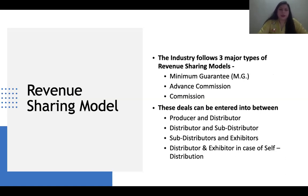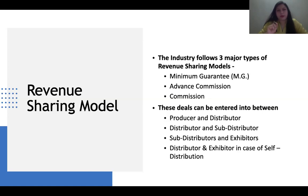The revenue sharing model is important — the industry follows three major types. The first is Minimum Guarantee: an initial fixed amount is paid to the producer by the distributor irrespective of how the film performs. The film then belongs to the distributor. Overflow sharing means the distributor first recoups his investment, then his commission, then splits the balance with the producer. The second is Advance Commission: a refundable advance payable by the distributor to the producer; if the film does not do well, the producer refunds part of the advance as per agreement.